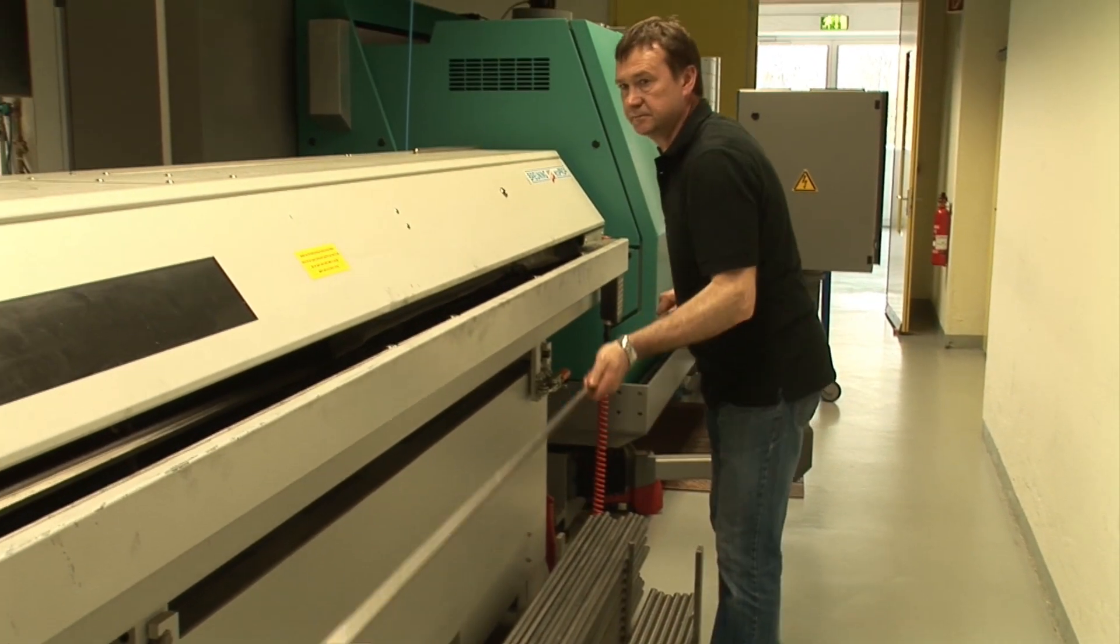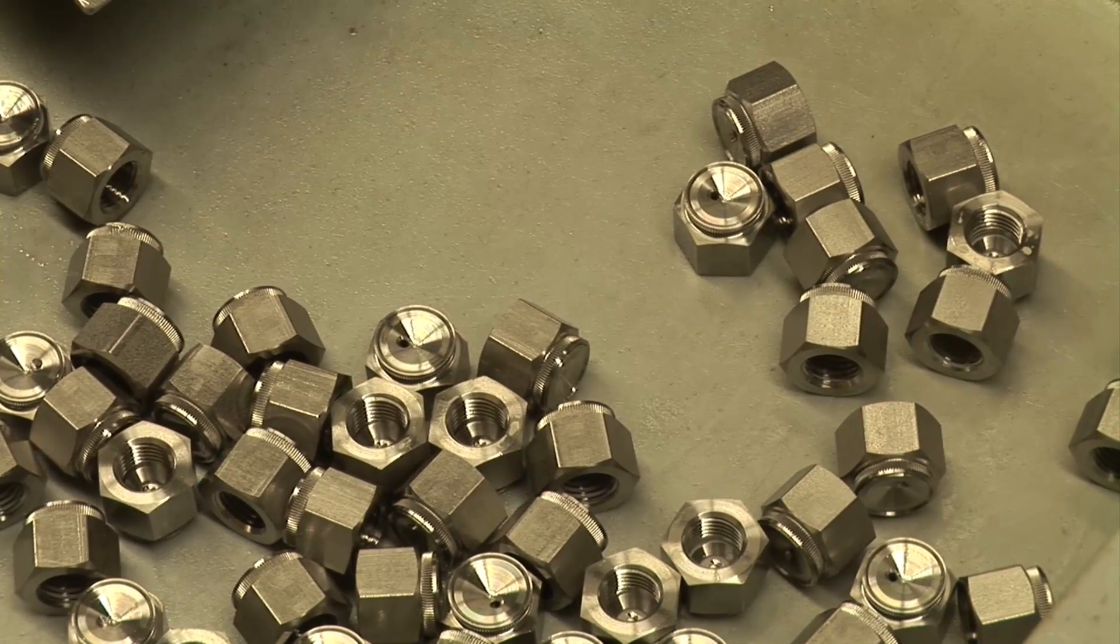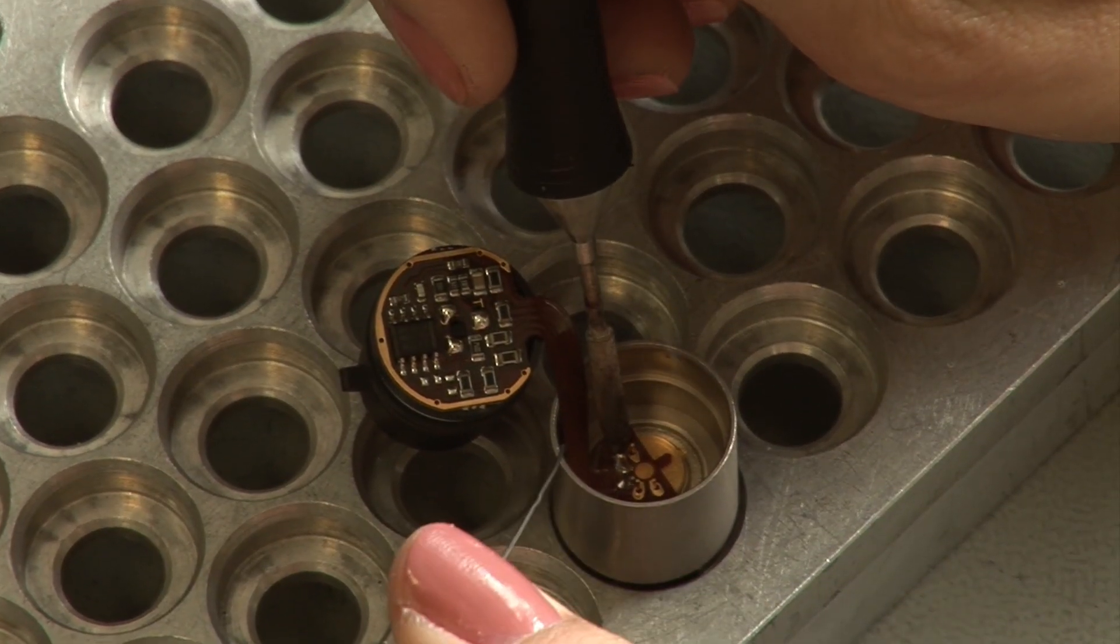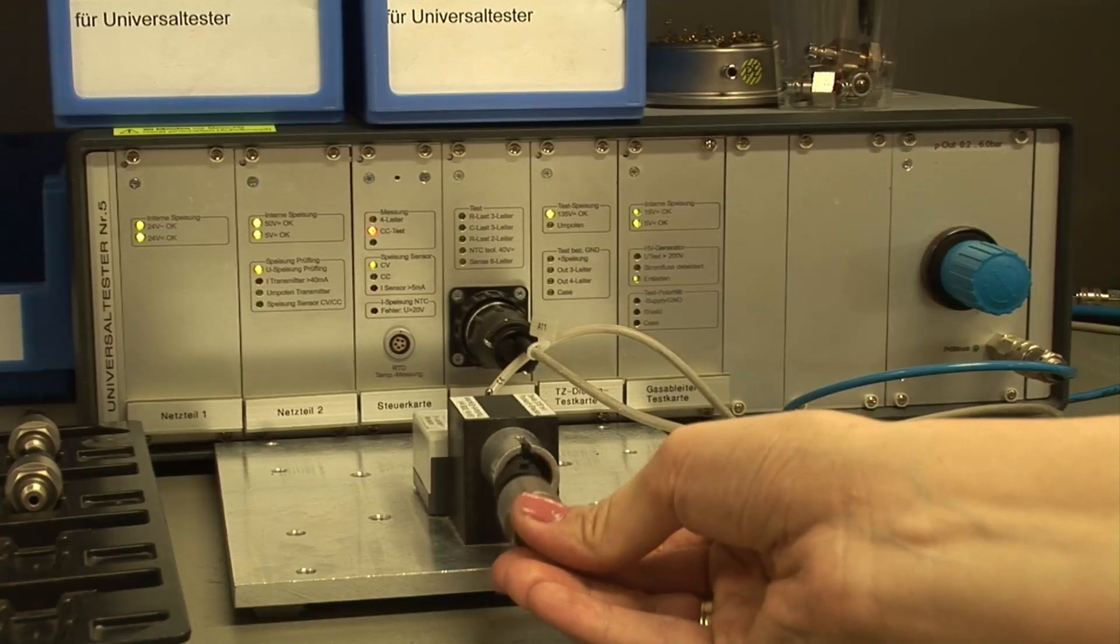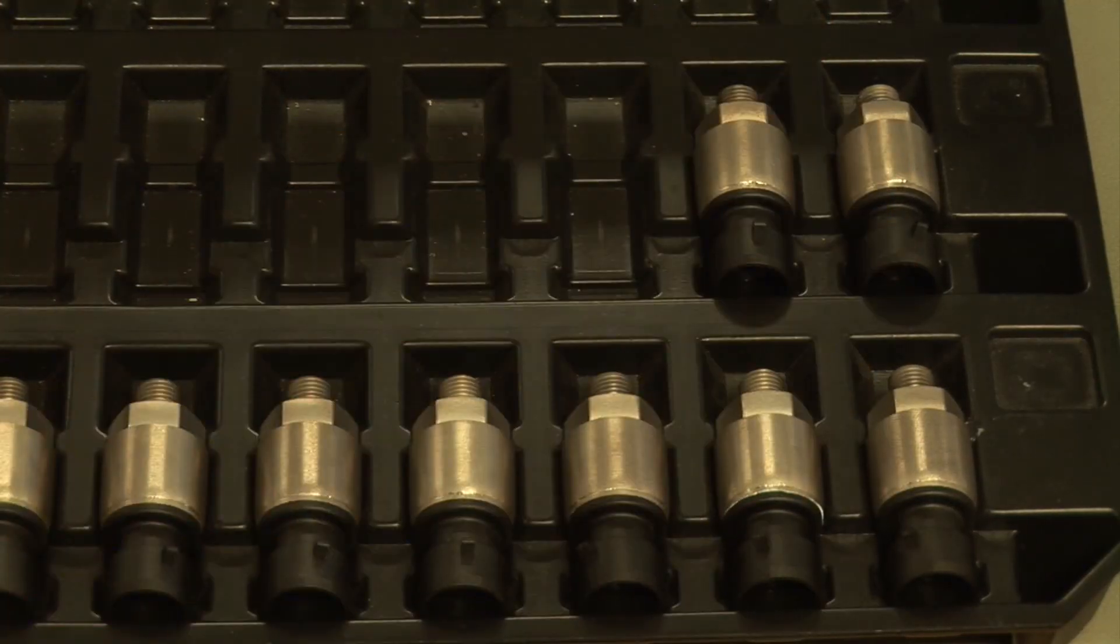Pressure sensors are made up of many individual parts. The entire value added chain, from the manufacture of the individual parts and the soldering of the electronics, right up to the final inspection of the finished products, takes place at the headquarters in Winterthur. All Keller products are therefore 100% made in Switzerland.